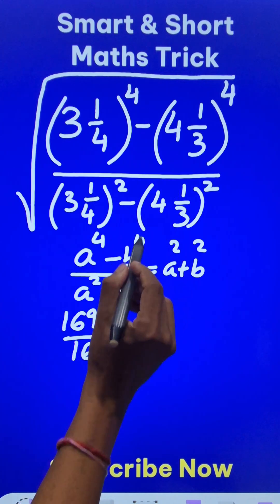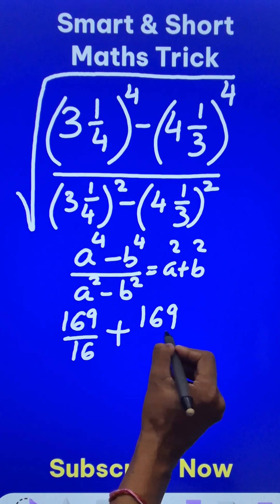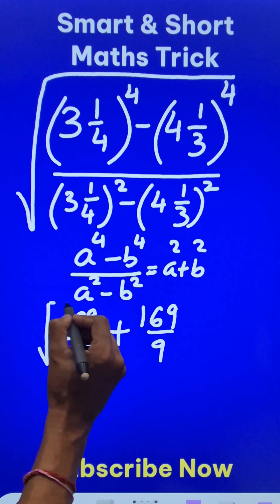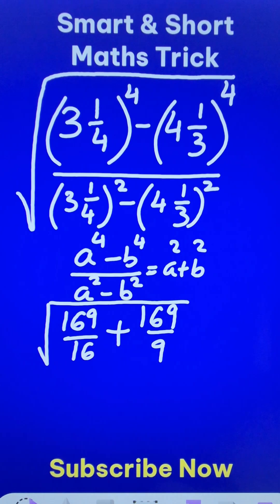Again, this is 13, so 13 by 3, so 169 by 9. And now I want to find the square root of this expression which will give me my final answer.